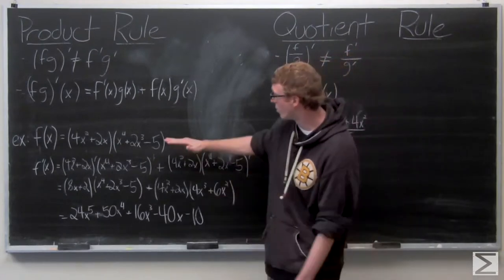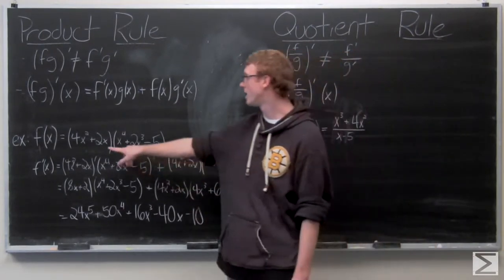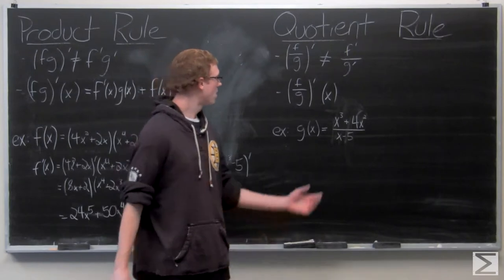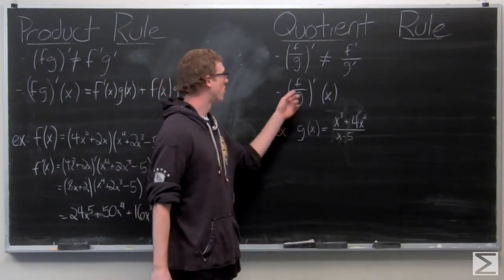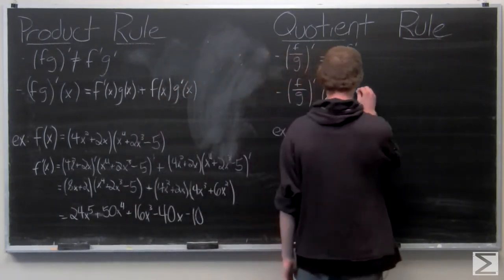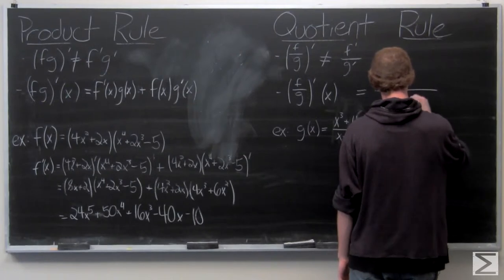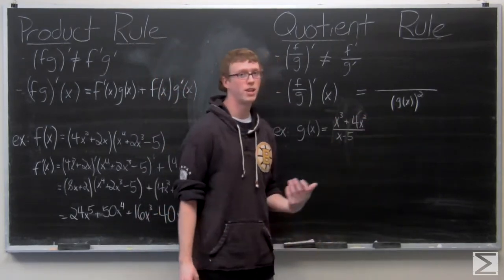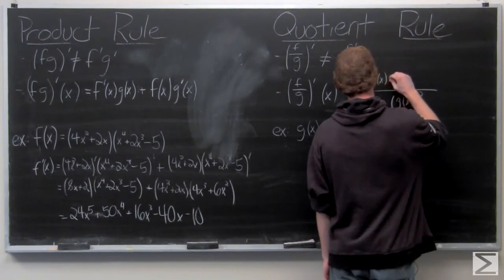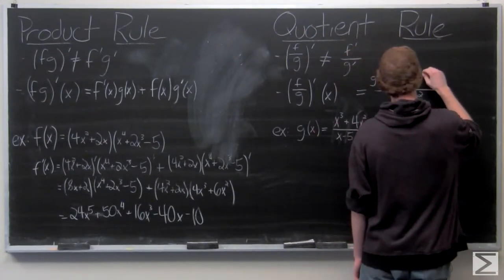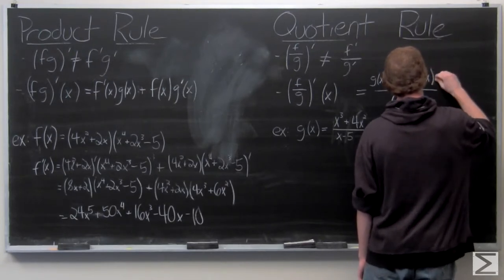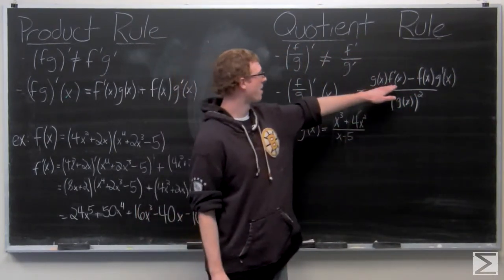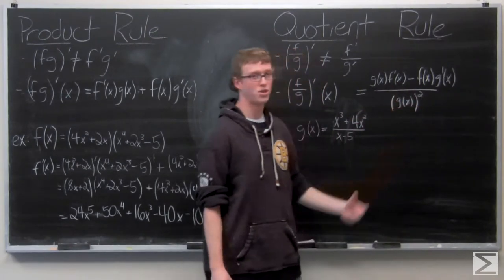I'll leave it as a separate exercise, but if you go ahead and multiply the original expression out and then use the power rule and linearity to calculate the derivative, you'll come up with the same answer. Now we'll take a look at the quotient rule. Whatever function is in the denominator will remain in the denominator and get squared. In the numerator, you bring g of x up to the top and multiply it by f prime of x, then subtract f of x times g prime of x.